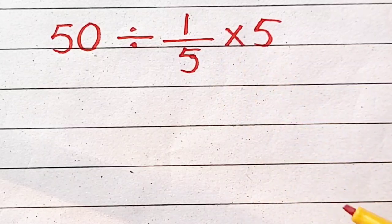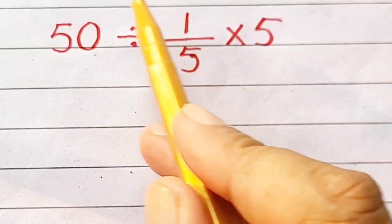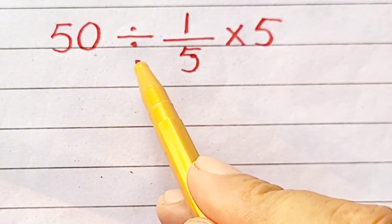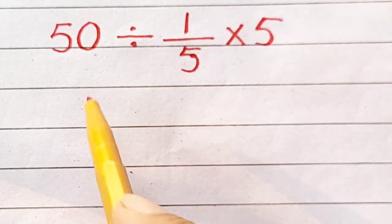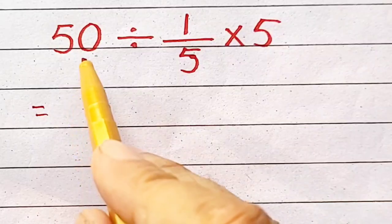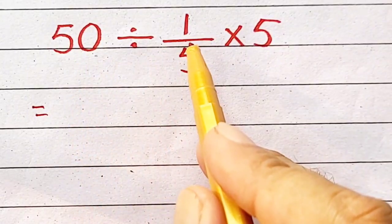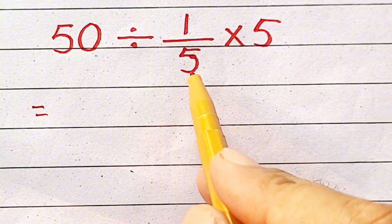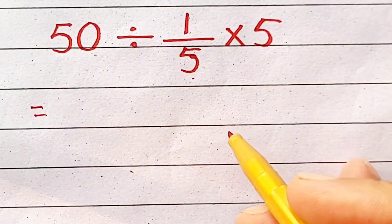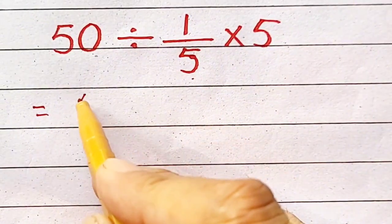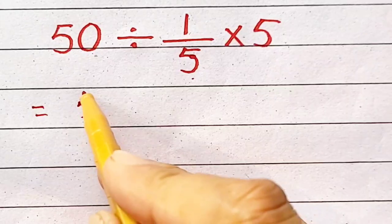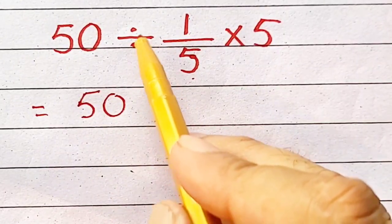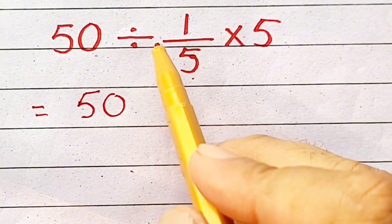First of all, you have to solve the function which carries division. So, 50 divided by 1 by 5 will be 50, and apply flip rule.